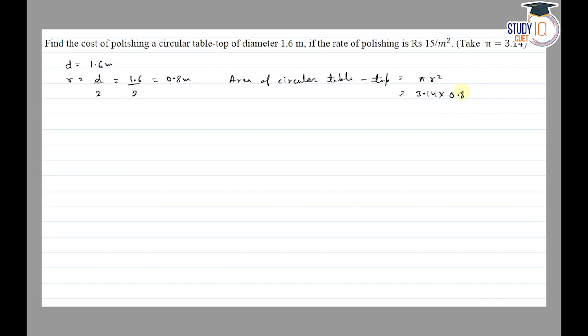Calculating: 3.14 into 0.8 into 0.8, this equals 2.0096 meter square. Rate of polishing given is Rs 15 per meter square.